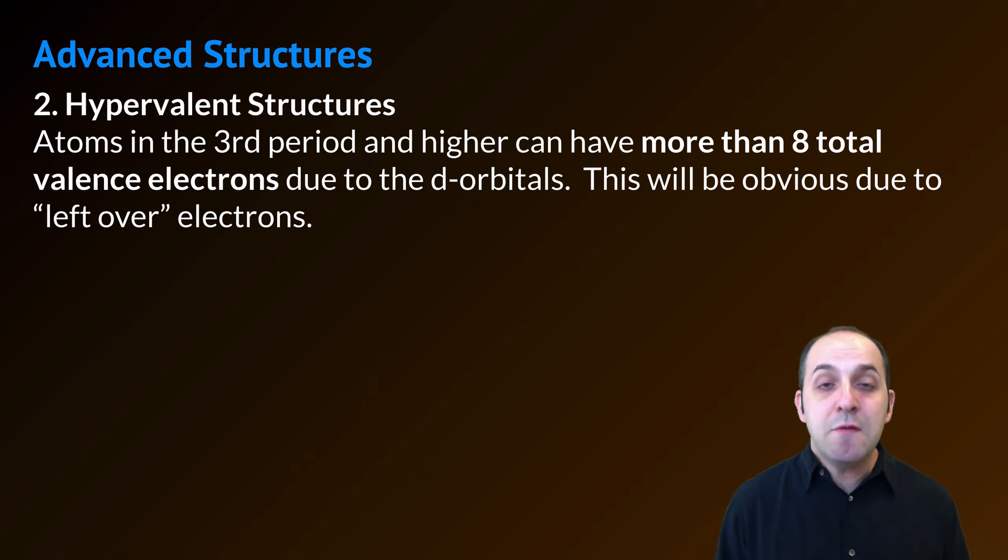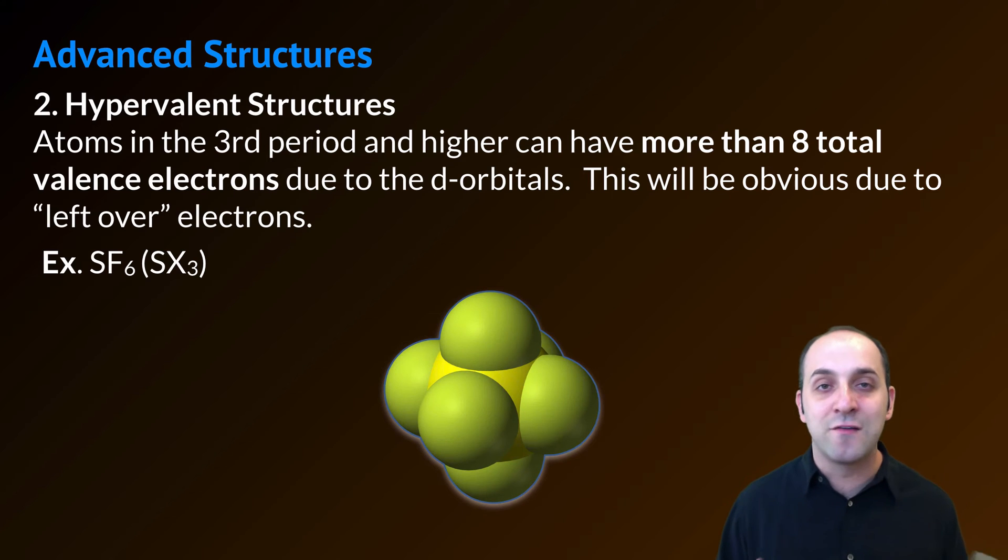Our second example are what we call hypervalent structures. In a hypervalent structure, our atom is going to have access to more than eight total valence electrons. This is always going to involve atoms that are in the third period or above, and it has to do with the fact that those atoms now have a D sub-level into which they can put additional valence electrons. This will always be obvious when you're making a covalent structure because you're going to have leftover electrons. Those electrons should go onto the atom in the third period. Our example here is sulfur hexafluoride or SF6. Sulfur is a third period element, and so as a result it can make more than four covalent bonds.